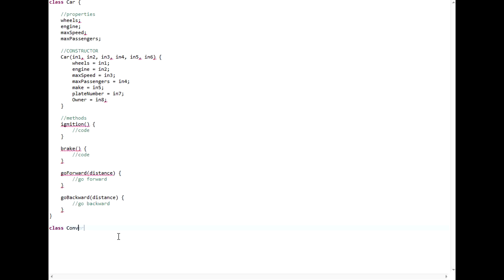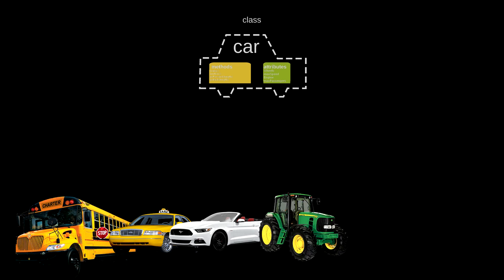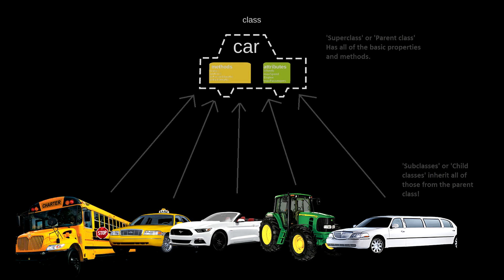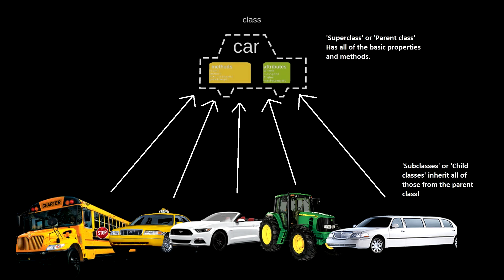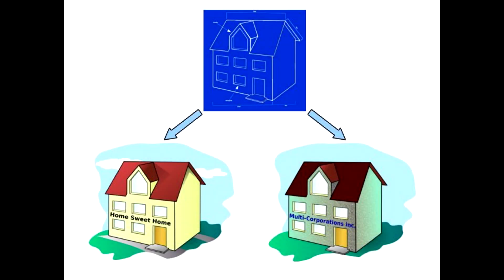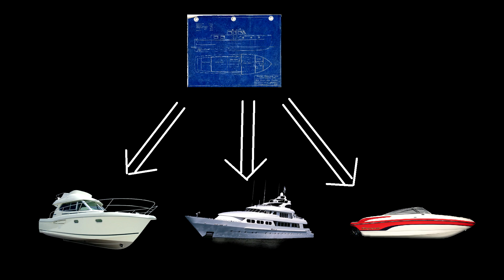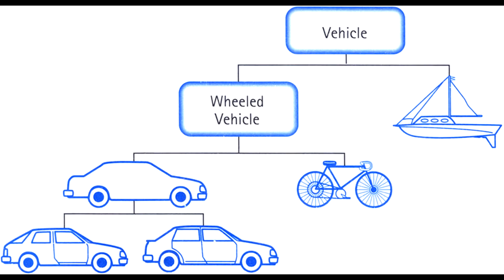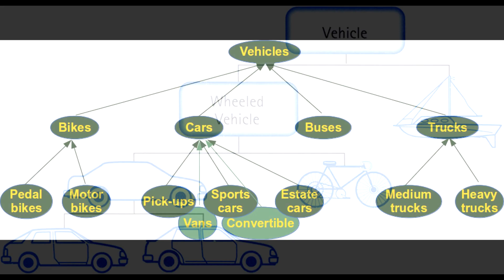After making a car class, we can get even more specific. We could create individual classes for every make and model of car, and have those new classes inherit all of the properties and methods from the parent car class. Let's say our child classes are bus, taxi, convertible, tractor, and limousine. What is convenient about inheritance is that there's no need to reprogram our original methods like ignition or brake — those are there already. Instead, I can focus on programming new properties and methods unique to each child class: give the convertible a retract-hood method, the limousine a bar with an extra bartender property, or the bus a stop-sign method. The inheritance doesn't need to stop here either — I could define new subclasses of the tractor or bus, or make the car class a subclass of a more abstract vehicle class. These kinds of hierarchies are common and allow a programmer to attach new functionality onto a program as easily as attaching LEGO bricks to each other.